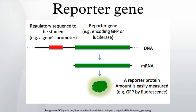To introduce a reporter gene into an organism, scientists place the reporter gene and the gene of interest in the same DNA construct to be inserted into the cell or organism. For bacteria or prokaryotic cells in culture, this is usually in the form of a circular DNA molecule called a plasmid. It is important to use a reporter gene that is not natively expressed in the cell or organism under study, since the expression of the reporter is being used as a marker for successful uptake of the gene of interest.